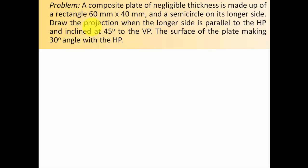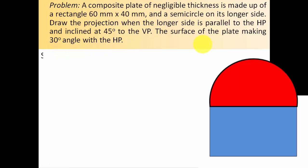Draw the projection when the longer side is parallel to the HP — this condition should reflect in our drawing — and inclined at 45 degrees to the VP. So the longer side, apart from being parallel to the HP, is also inclined to the VP at 45 degrees. The surface of the plate makes a 30 degree angle with the HP. Whenever you do problems on projection of planes, always make sure which reference plane the surface is inclined to.